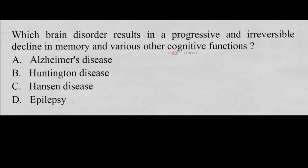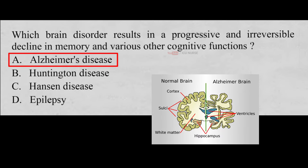Which brain disorder results in a progressive and irreversible decline in memory and various other cognitive functions? A. Alzheimer's disease, B. Huntington disease, C. Hansen disease, D. Epilepsy. And the correct answer is A, Alzheimer's disease. Alzheimer's disease is a neurodegenerative disorder characterized by gradual memory loss and declining cognitive function.